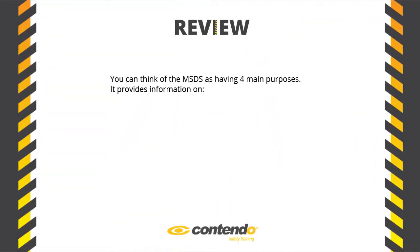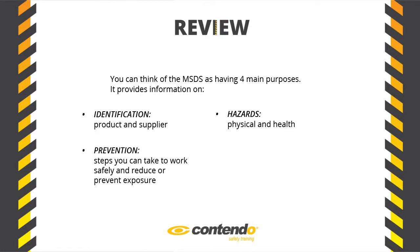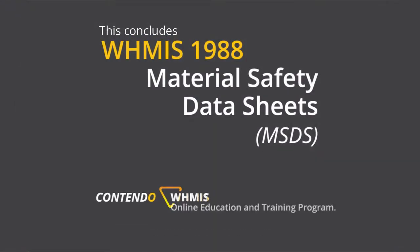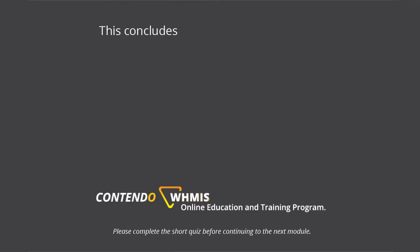In review, you can think of the MSDS as having four main purposes: it provides information on product and supplier identification, physical and health hazards, exposure prevention, and incident response measures and procedures for various situations. This concludes WHMIS 1988 Material Safety Data Sheets. Please complete the short quiz before continuing.